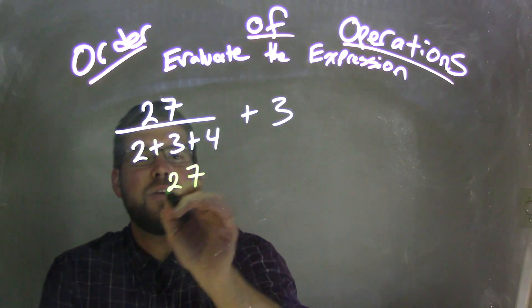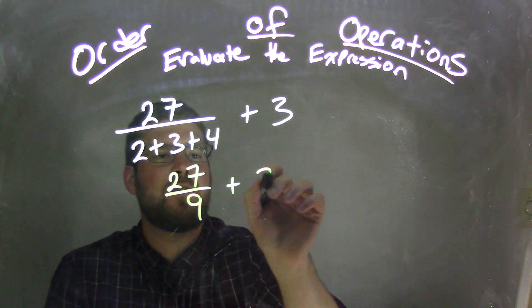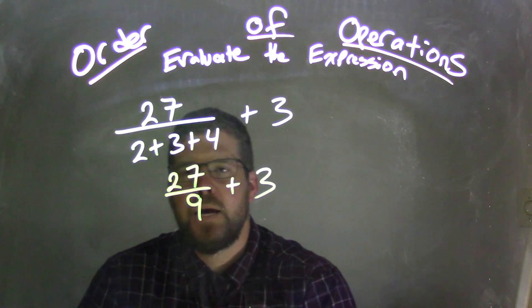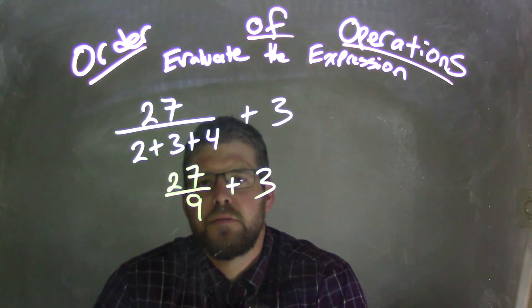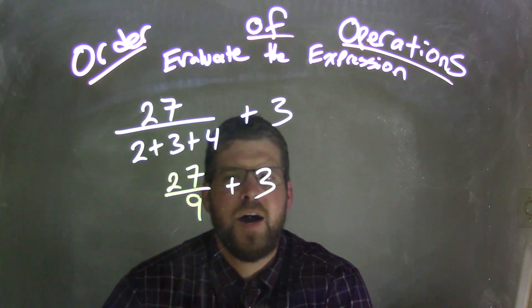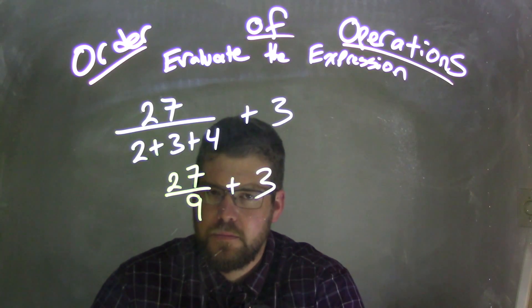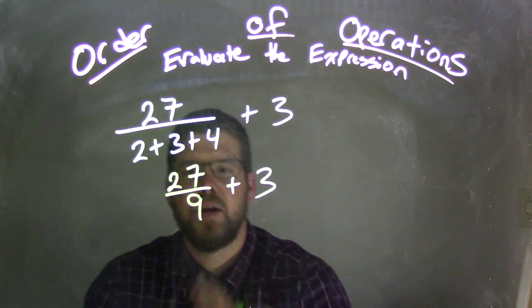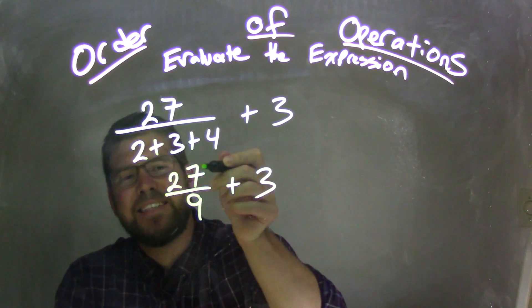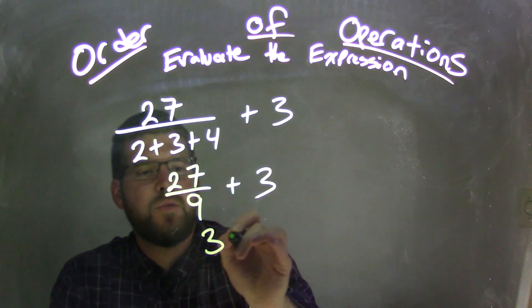So now we have 27 over 9 plus 3. Well, 27 over 9 plus 3, 27 divided by 9 is what? Well, 3, right? So 27 divided by 9, we have to deal with that division first here. So we have 3 plus 3.